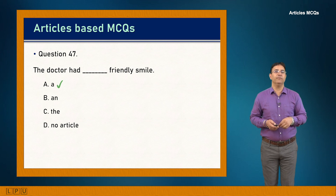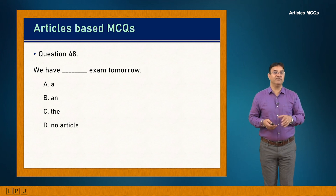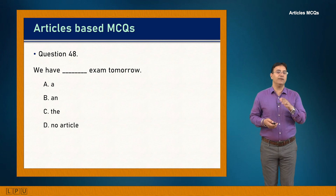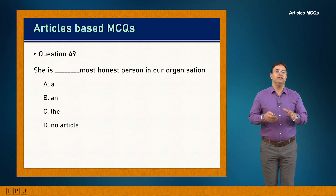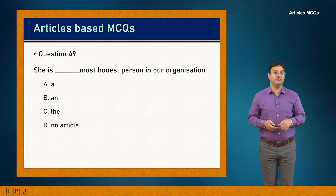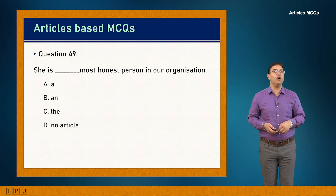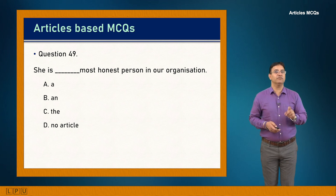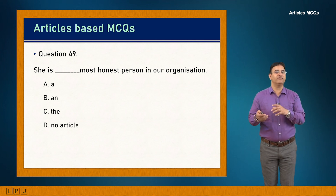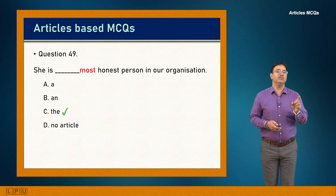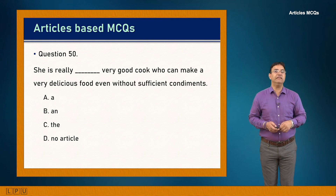Question 47: The doctor had dash friendly smile. 'Friendly' starts with a consonant — 'a friendly smile.' Answer is A: 'The doctor had a friendly smile.' Question 48: We have dash exam tomorrow. 'Exam' starts with a vowel sound, so 'an' is used. Answer is B: 'We have an exam tomorrow.' Question 49: She is dash most honest person in the organization. Superlative form — 'the' is used.